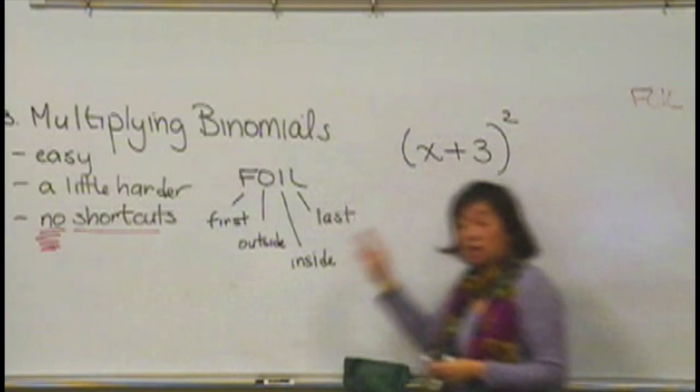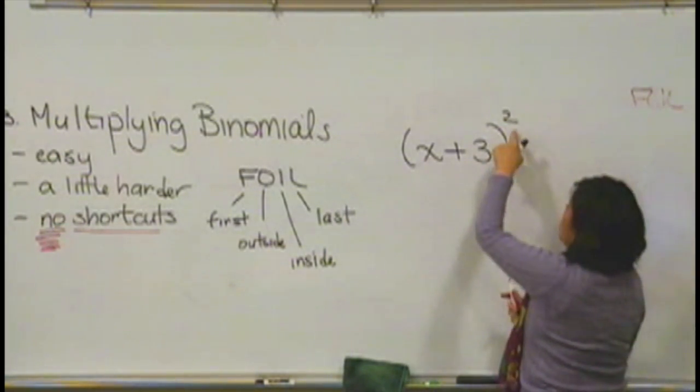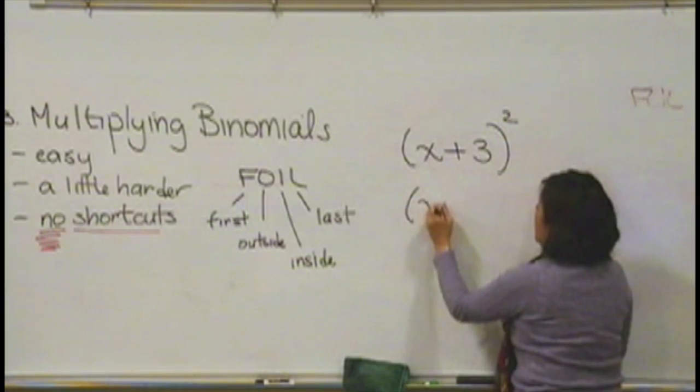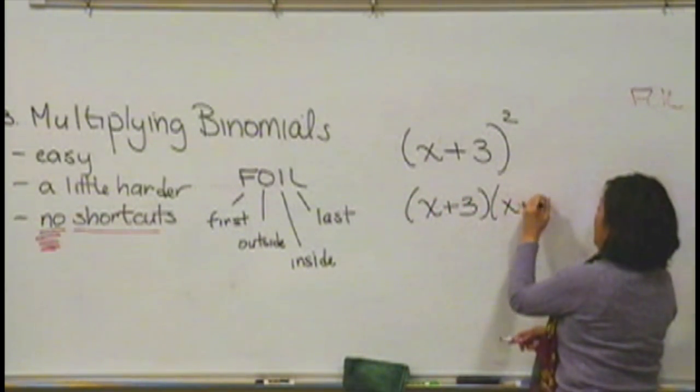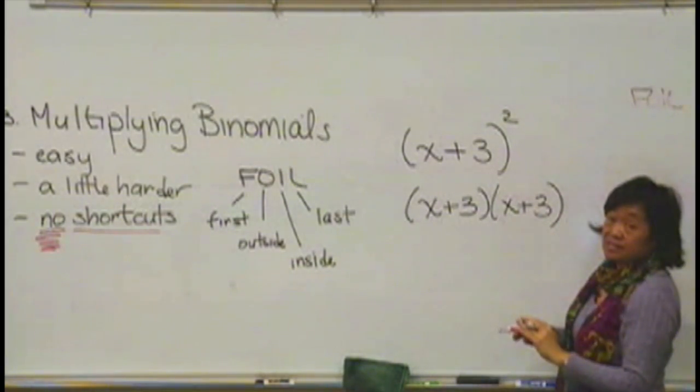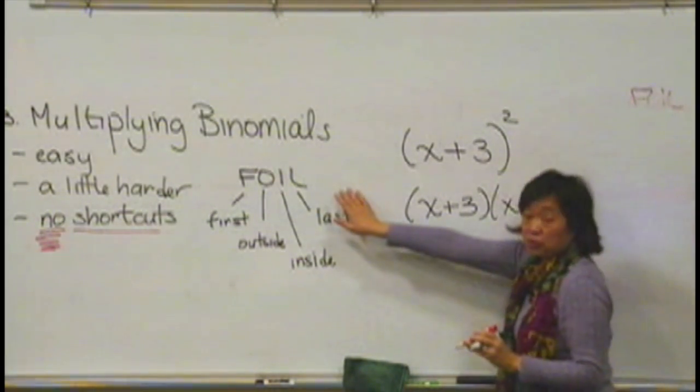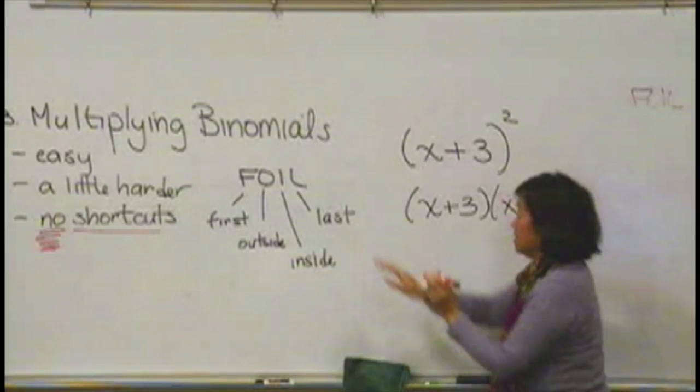So, if you should see a problem like this, make sure to write it out. This means write this out twice: x plus 3, x plus 3. And then, once that's done, you're going to, again, use your first outside, inside, last.